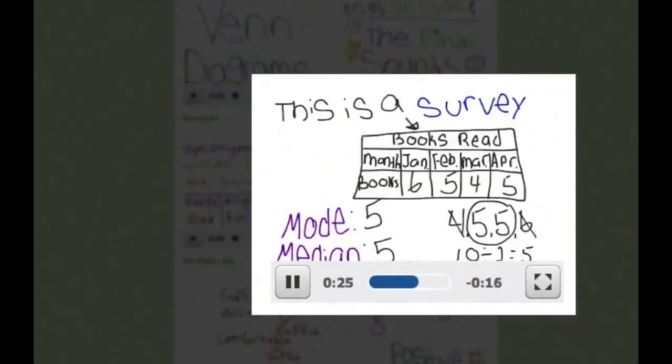This is a survey. Put the numbers from least to greatest: 4, 5, 5, 6. Cross off 4 and 6. The numbers you have left are 5 and 5. Add them, it is 10. Divide by 2, you get 5. The mode and the median is 5 and 5.